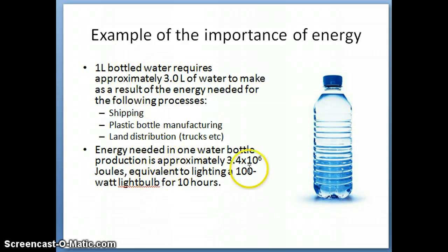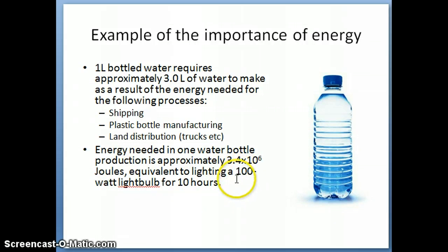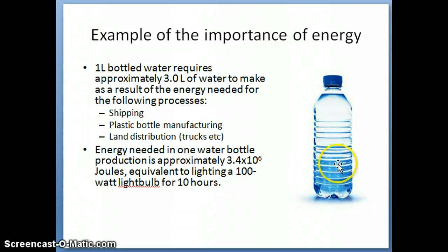In terms of energy equivalence, you actually need about 3.4 × 10⁶ joules of energy, which is equivalent to having a 100-watt light bulb on for about 10 hours. So if you go home and look at your light bulb, see if it's 100 watts and turn it on for 10 hours — that's approximately the amount of energy needed to produce just one bottle of water. Hopefully that gives you an idea of why energy is such an important concept to discuss, specifically when it relates to chemical reactions.